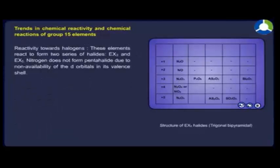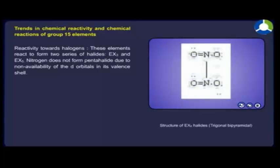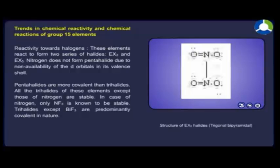Reactivity towards halogens. These elements react to form two series of halides, EX₃ and EX₅. Nitrogen does not form pentahalides due to non-availability of d orbitals in its valence shell. Pentahalides are more covalent than trihalides. All the trihalides of these elements except those of nitrogen are stable. In case of nitrogen, only NF₃ is known to be stable. Trihalides except BiF₃ are predominantly covalent in nature.